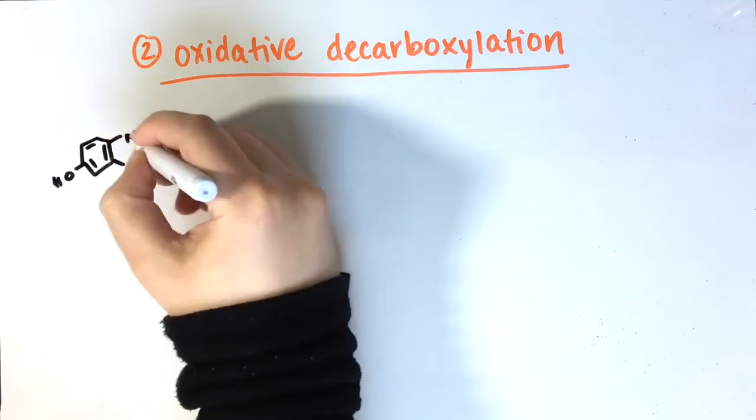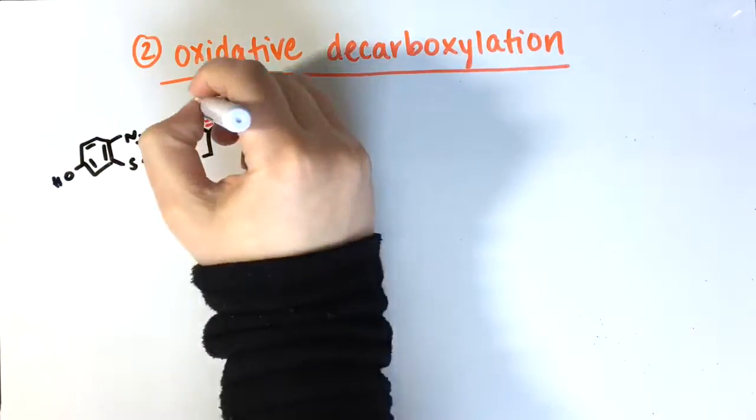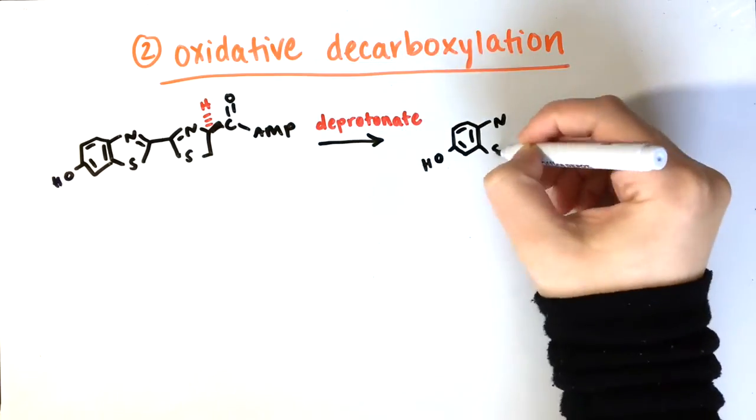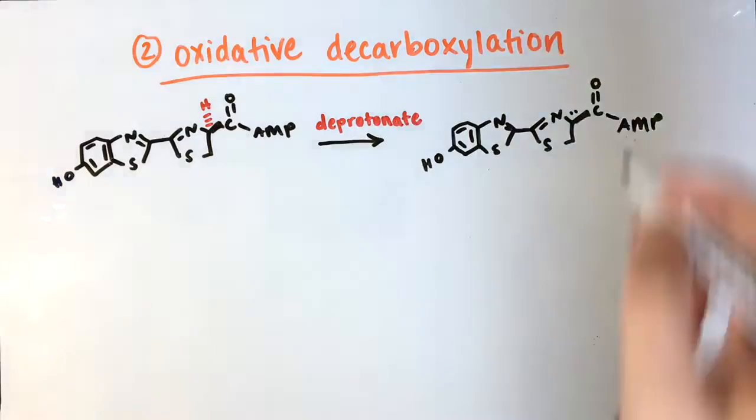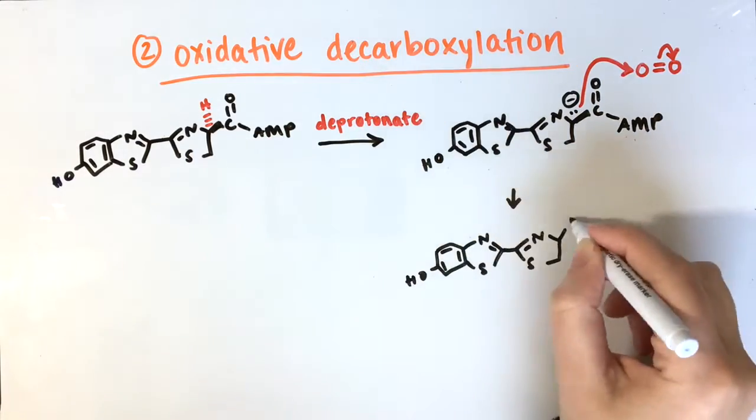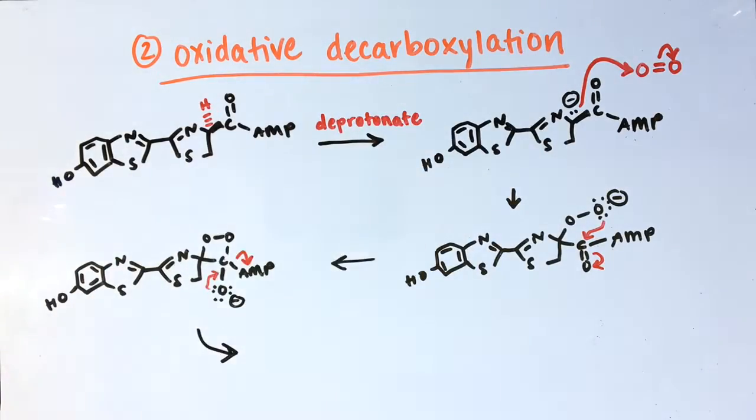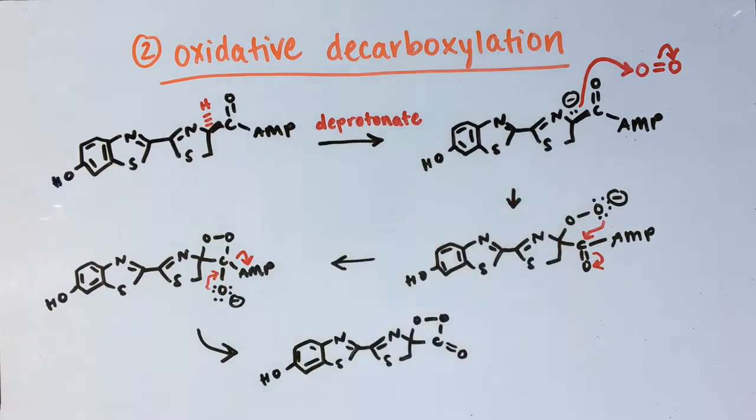A residue in the active site of the enzyme then deprotonates the adenylate. The carb-anion can now attack molecular oxygen. A ring is formed and AMP is released. This results in a high-energy dioxytonone intermediate.